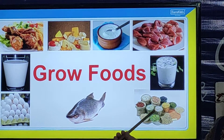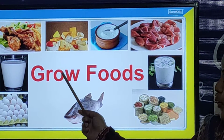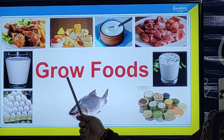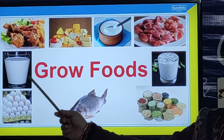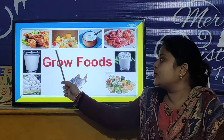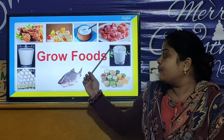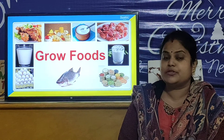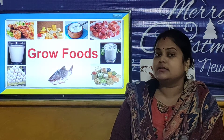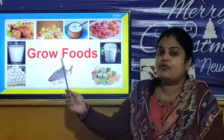And these are the Pulses. All the Pulses and Lentils come under Grow Food. Fish and Egg also go under Grow Food. And your Milk also contains a large amount of protein in it, so Milk also comes under Grow Food. In your food pyramid, the Grow Food occupies the third position.